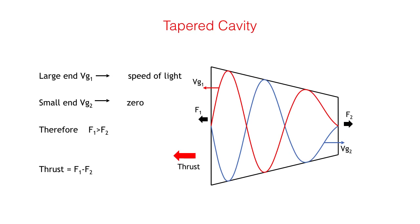In a well-designed cavity, the group velocity at the large end vg1 approaches the speed of light, whilst that of the small end vg2 approaches zero.